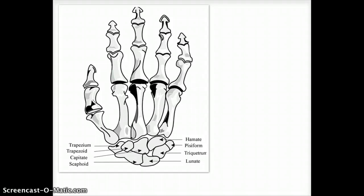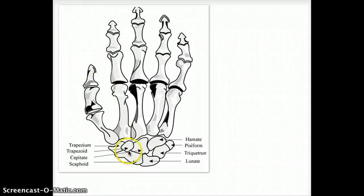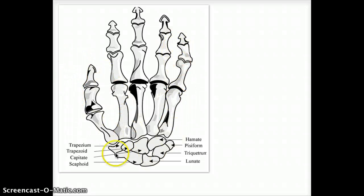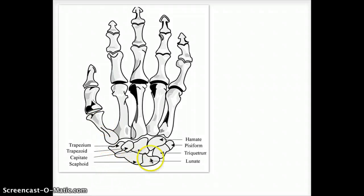What I do is I always look at an X-ray of a hand and I think of: okay, this is the thumb side and this is the fifth digit. So I start from the thumb side and I start off with the most proximal metacarpals to the wrist.